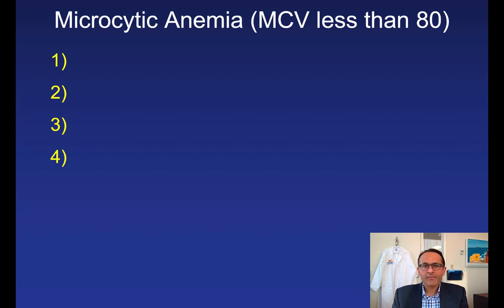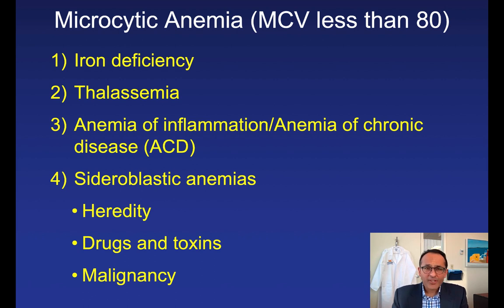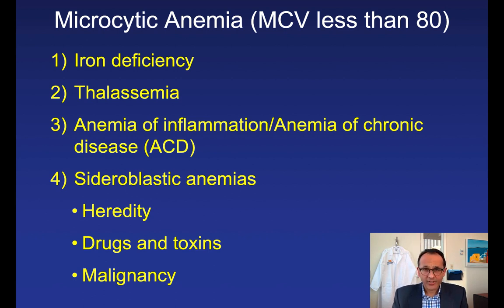There are four main causes of microcytic anemia. The first is iron deficiency anemia, which is the most common nutritional deficiency in the world and one of the most common causes of microcytic anemia. Once you make the diagnosis of iron deficiency anemia, you can't just stop there — you have to figure out the underlying cause. In a non-menstruating patient, you must rule out underlying GI blood loss, specifically due to colorectal cancer.